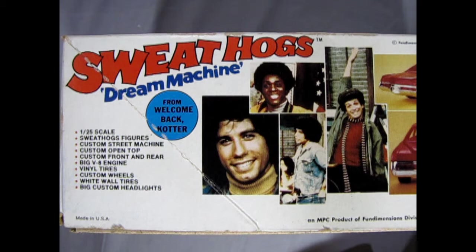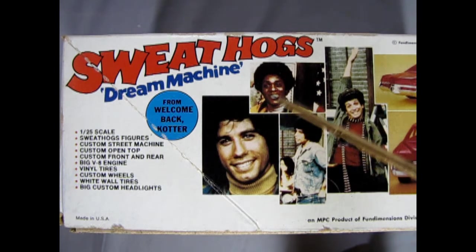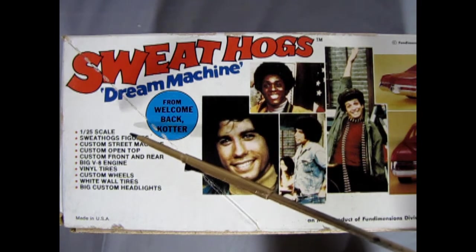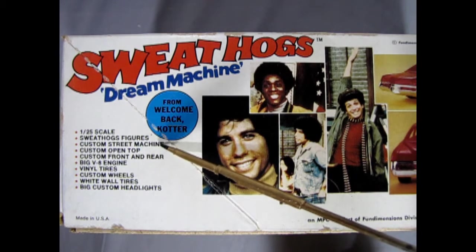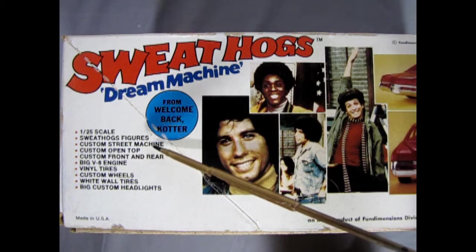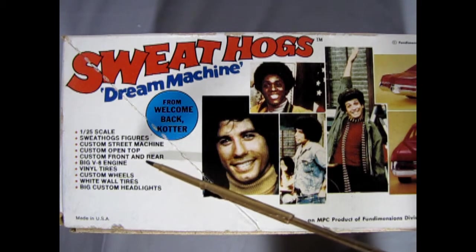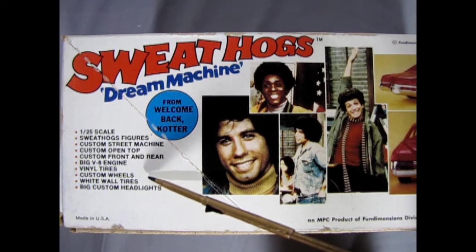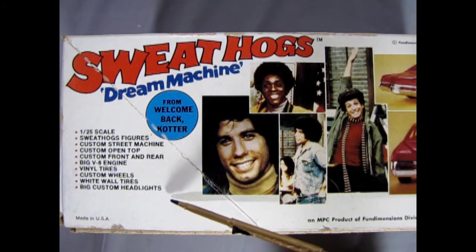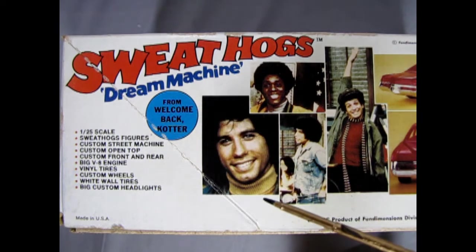Here on the side of the box we have the Sweathogs Dream Machine. This is a 125th scale model kit. It comes with the Sweathog figures, custom street machine, custom open top, custom front and rear, big V8 engine, vinyl tires, custom wheels, white wall tires, big custom headlines. Of course from Welcome Back Cotter.